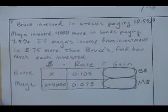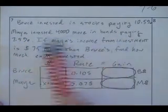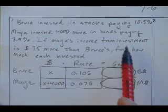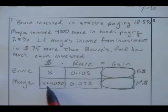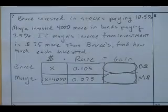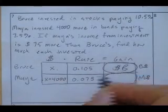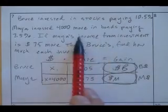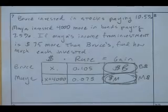Bruce invested in stocks paying 10.5%. Maya invested $4,000 more in bonds paying 7.5%. Maya's income from her investment is $75 more than Bruce's — find how much each invested. You know the rates. Let Bruce's investment be x and Maya's be x plus 4,000. Multiply each by their rate to get their gains, then set Maya's gain equal to Bruce's gain plus 75.